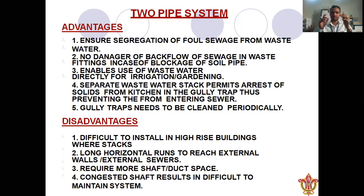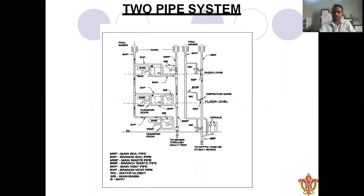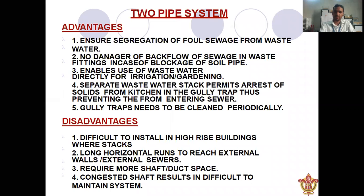The first advantage of the two pipe system is that it ensures segregation of foul sewage from wastewater, so there is no danger of backflow of sewage into the waste fittings in case of a blockage in the soil pipe.